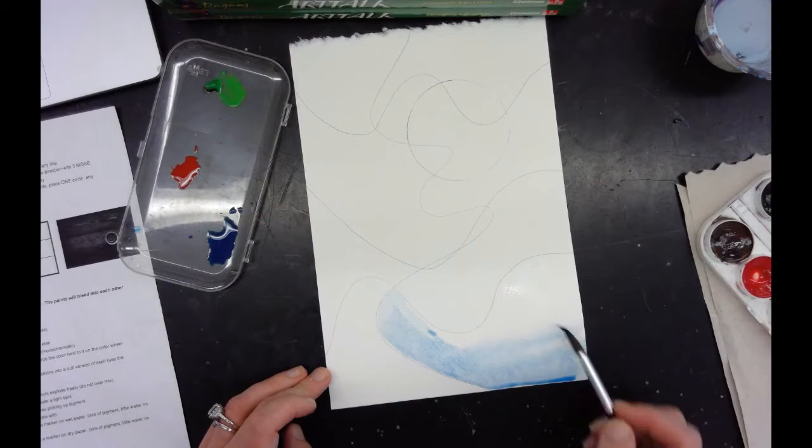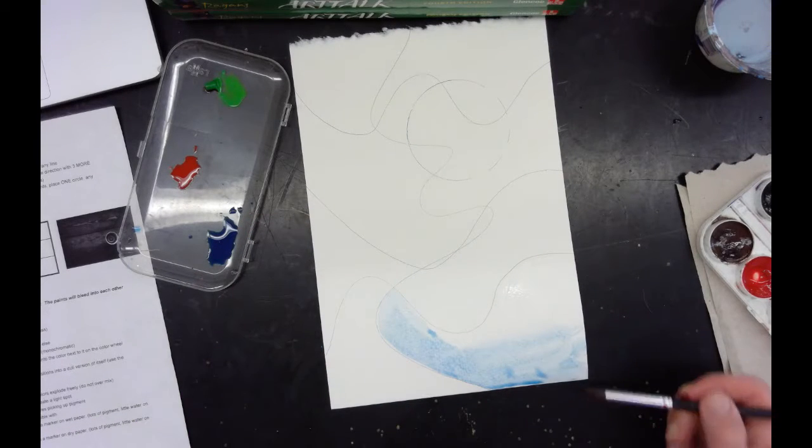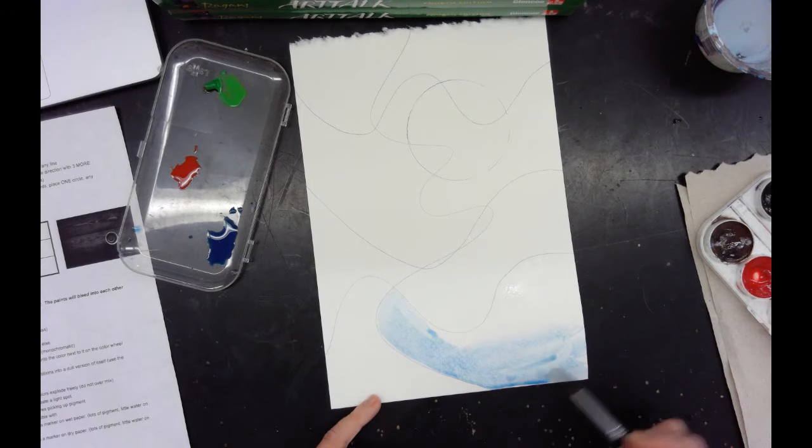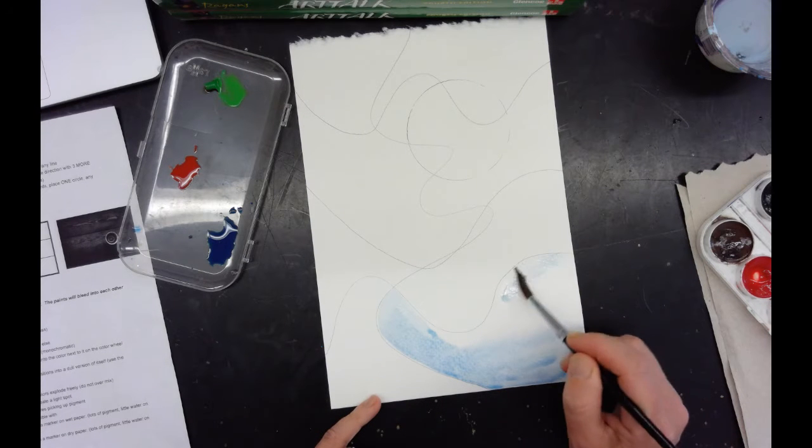You can see I'm turning my paper just so it's easier. Down here I had a drip edge forming; I'm going to pick that up and use it on this other side.